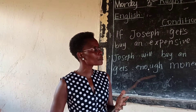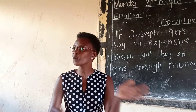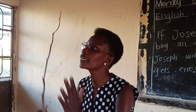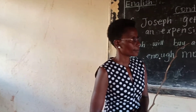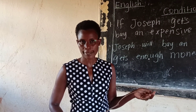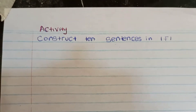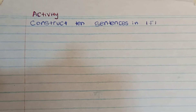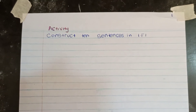I expect you to construct two more sentences of that kind. Could you please share with the person next to you and tell that person two or more sentences? And then after that, we have our exercise — just get ready for it. The basic activity is to construct ten sentences in 'if one.' Just that. Take your time and do that exercise.